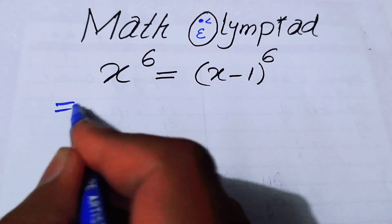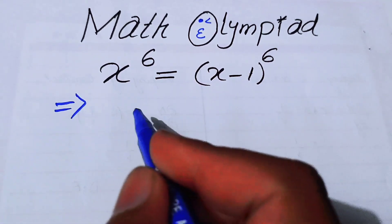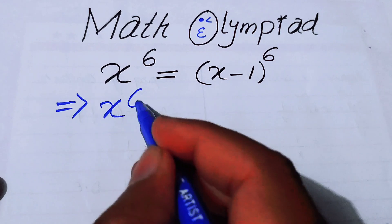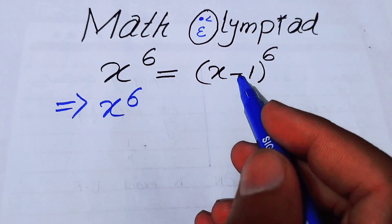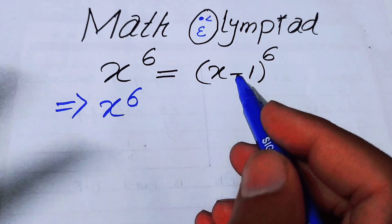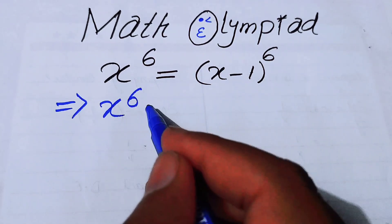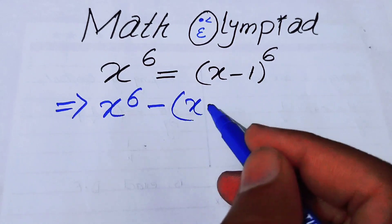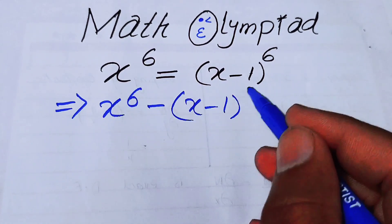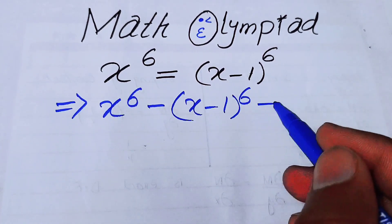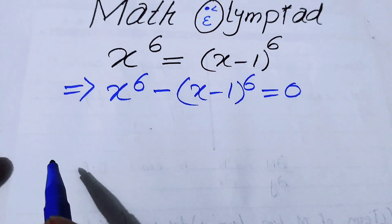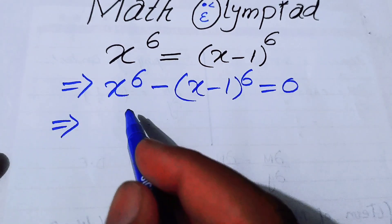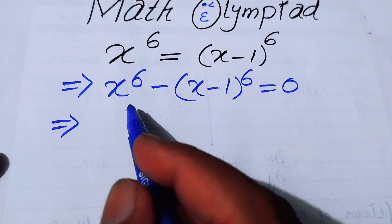The first thing we are going to do is rearrange the terms. We move x minus 1 to the power of 6 to the left-hand side, so it becomes x⁶ minus (x−1)⁶ equals 0.